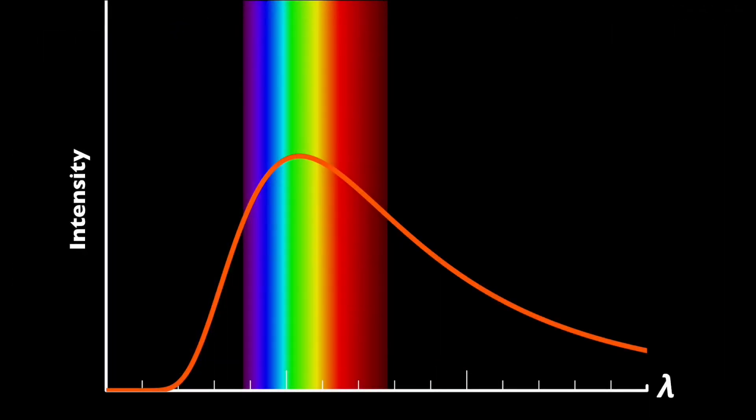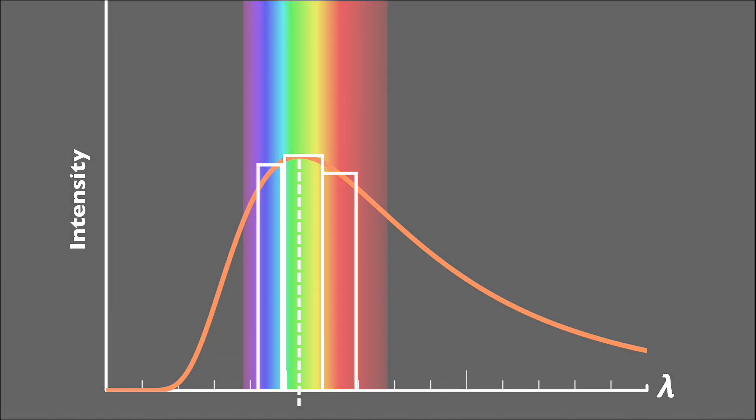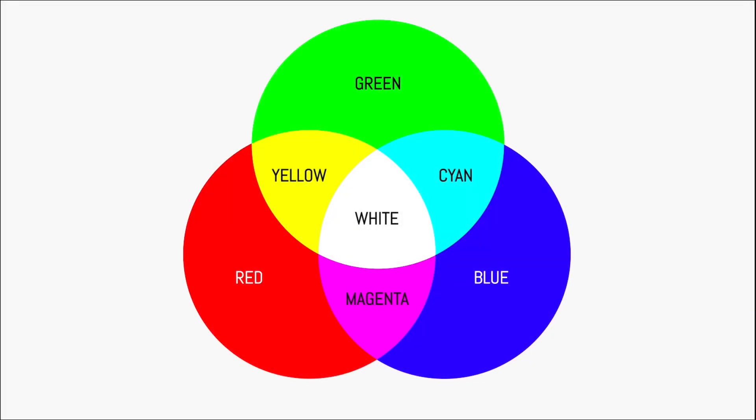So if we look at a blackbody curve from a potentially green star, which can be identified as such by the location of the peak wavelength, we'll actually see almost equal amounts of red and blue with the green. And as it turns out, in terms of light, the primary colors are red, blue, and green.